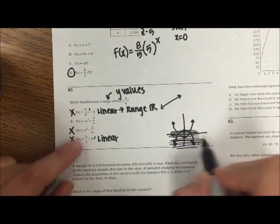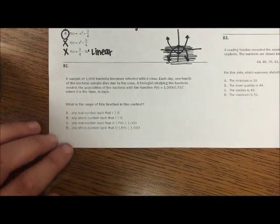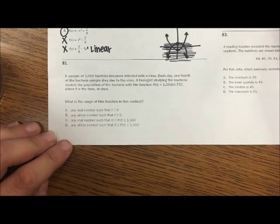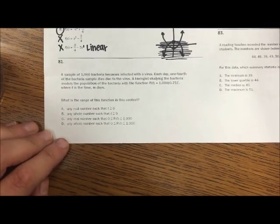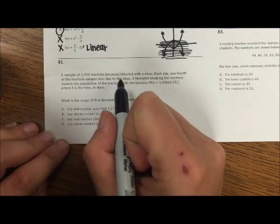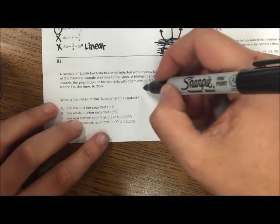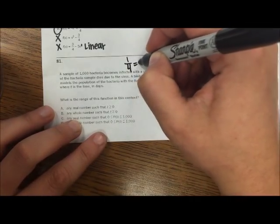81: A sample of a thousand bacteria becomes infected with a virus. Each day one-fourth of the bacteria sample dies due to the virus. Okay, one-fourth is 25%, so that's 0.25 as well.